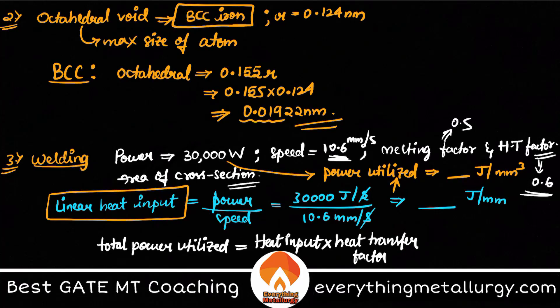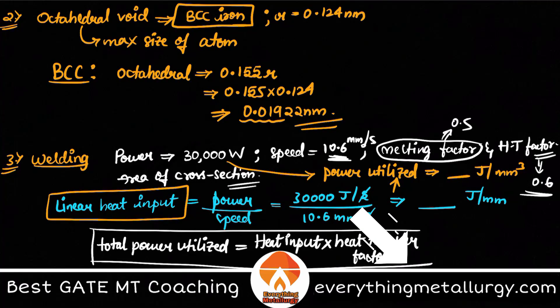So the total heat generated into the heat transfer factor is the heat actually transferred into the body. But is this power completely utilized for melting? No. Why? Because we also have something called as melting factor, which is 0.5 or 50 percent. That means if you give 100 joule of energy transferred to the body, only 50 joule is used for melting. So the total heat utilized for melting is equal to heat input × heat transfer factor × melting factor.